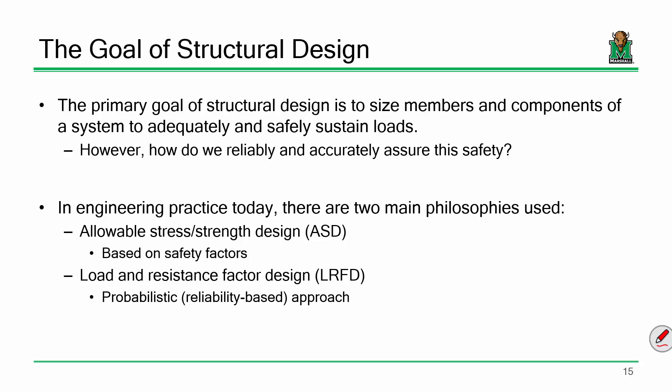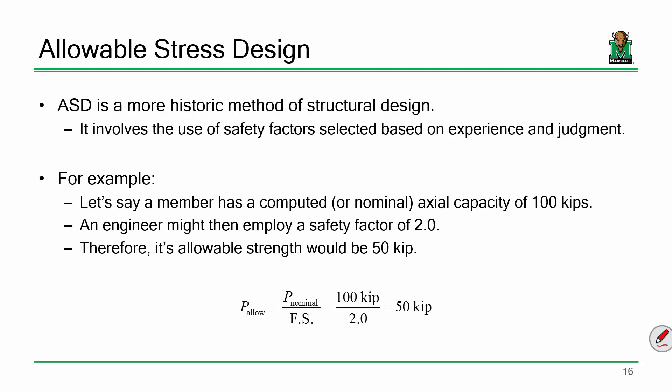We ultimately came down to two primary theories. Allowable strength design makes sense right off the bat — it's simple, it's straightforward. It has a little bit of an issue though when you start thinking about things like uniform levels of safety and ensuring proper risk management. Let's go back and make sure we understand what's going on with these two philosophies.